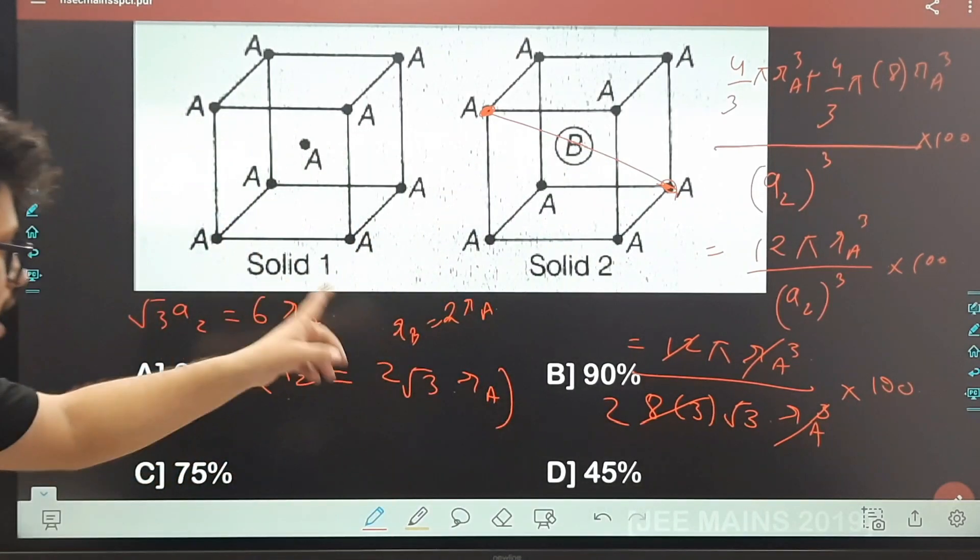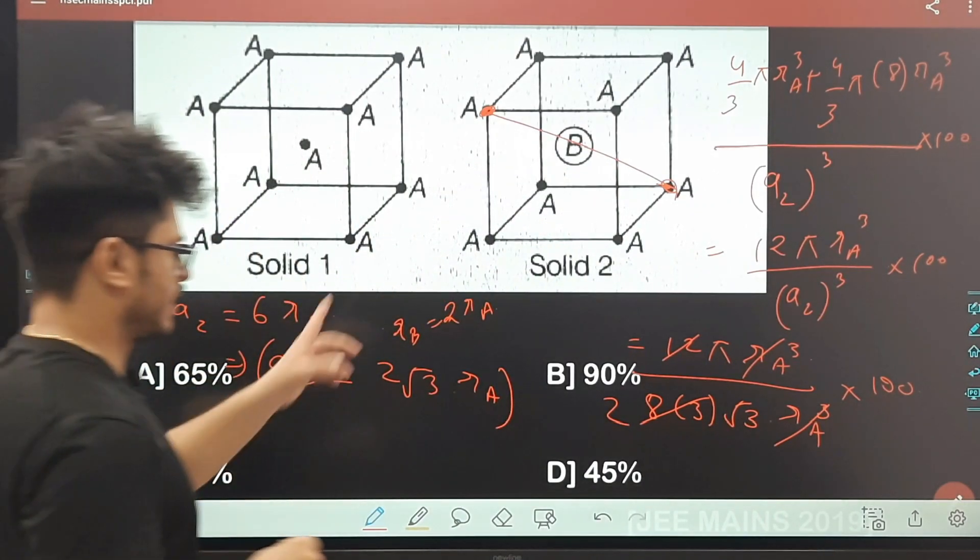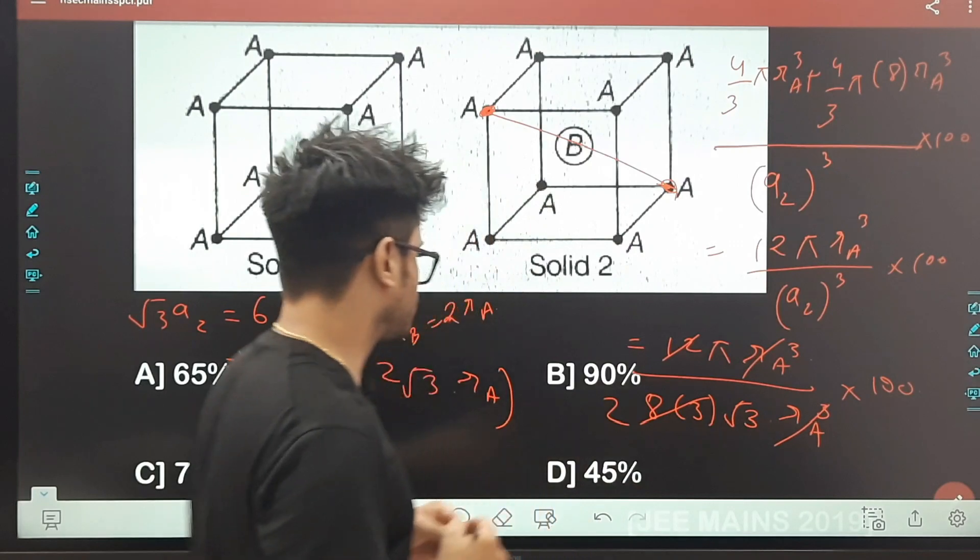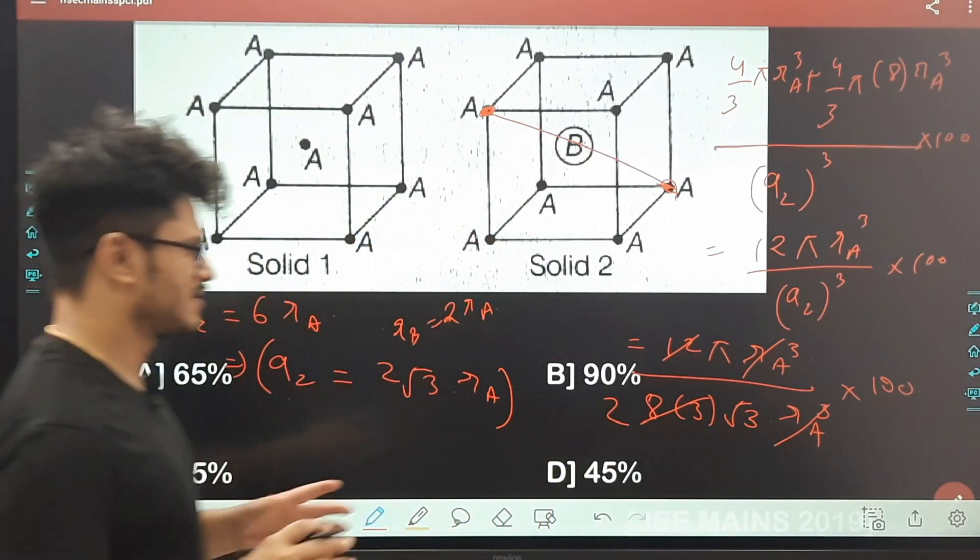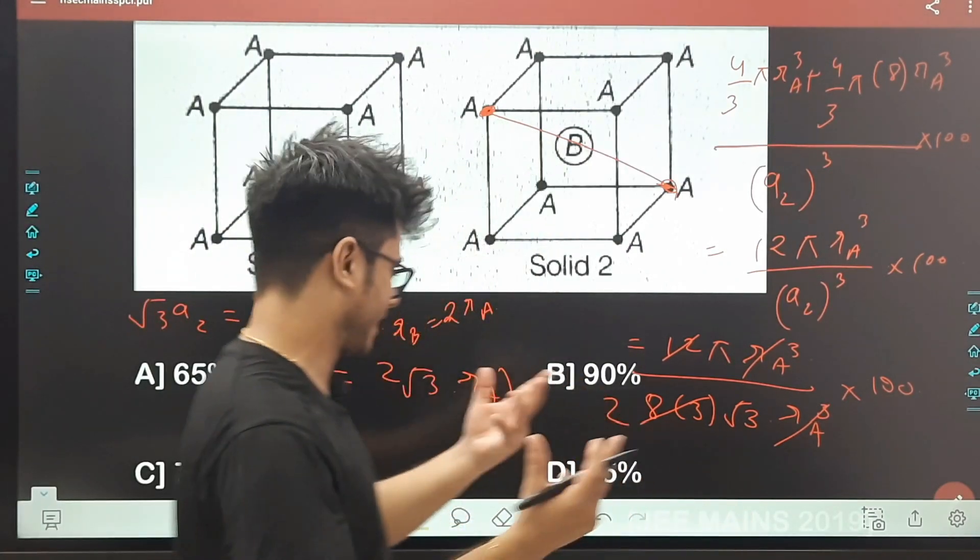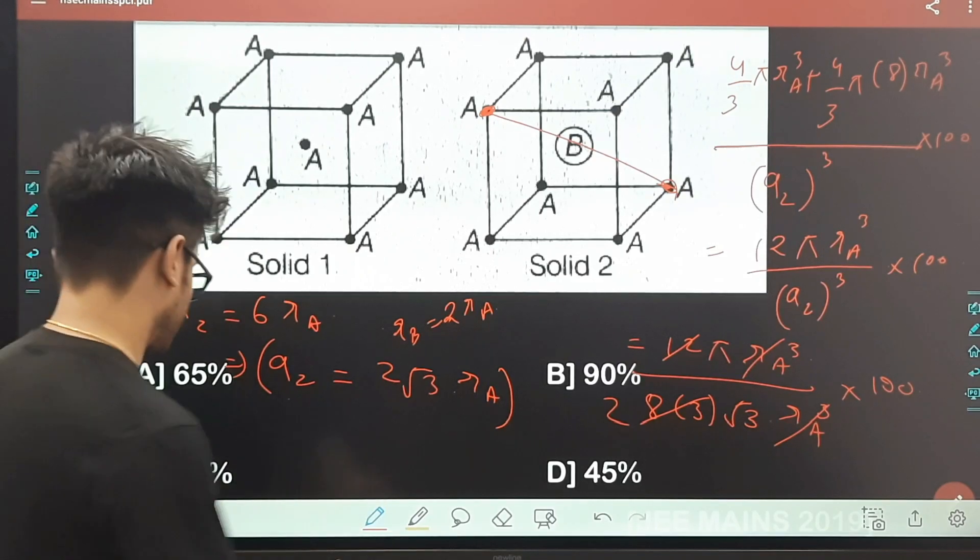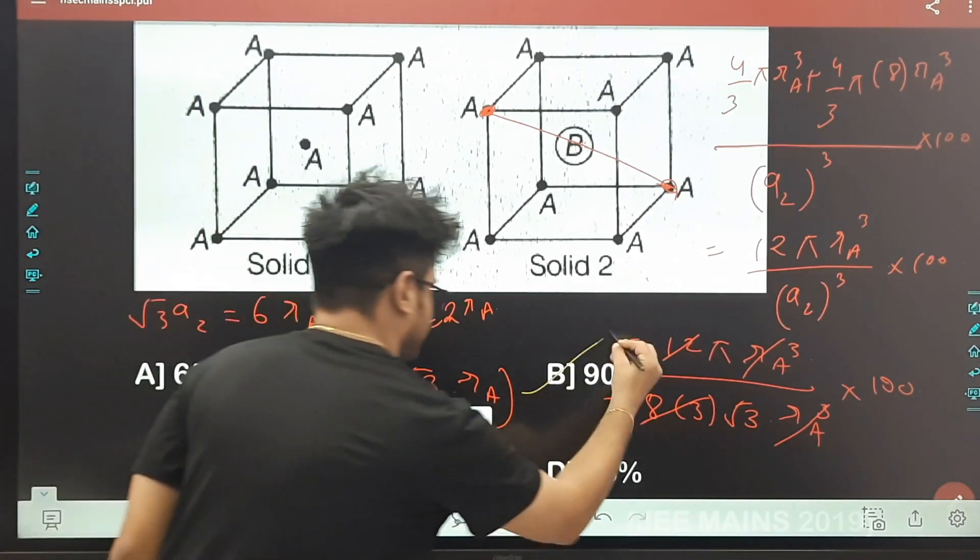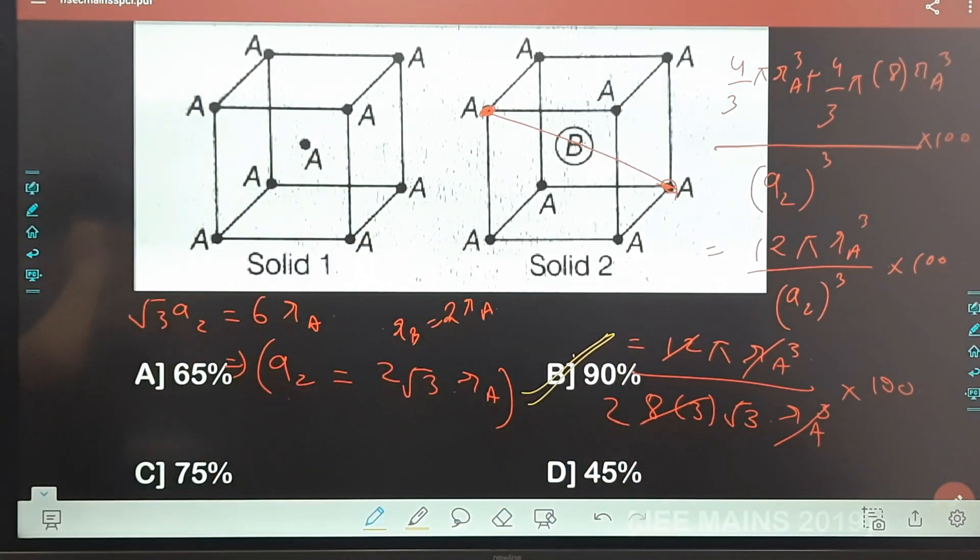That is 3.14 upon 2√3, it will be approximately 90 percent. Wo aap exact calculation kar lena. Yes, so the correct answer is 90 percent, option number B. Utna bura nahi tha, Mains ke standard se thik tha, thoda bahut haath chalana pada.